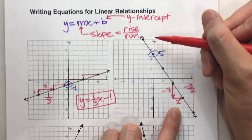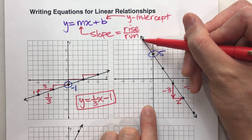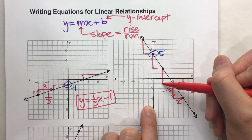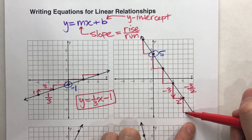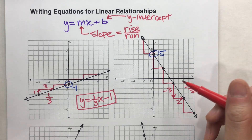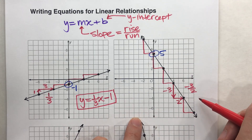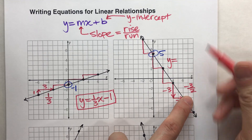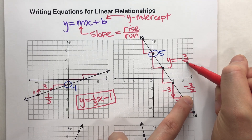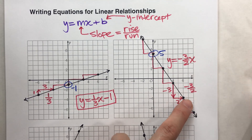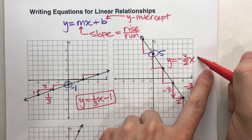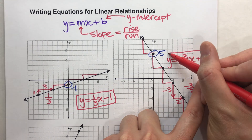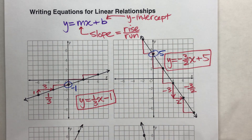I'm going down 3 steps and right 2 steps, so my slope is negative 3 over 2. Notice it doesn't matter which two points I pick — it's always down 3, right 2. So my slope is negative 3 over 2. Now I can write my equation: y equals my slope, negative 3 over 2, times x, plus my y-intercept, which is 5.